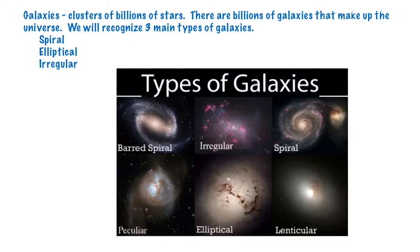Galaxies are made up of billions and billions of stars. There are also billions of galaxies that make up our universe. We're going to recognize three different kinds of galaxies: spiral, elliptical, and irregular.